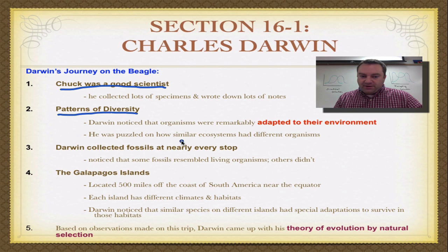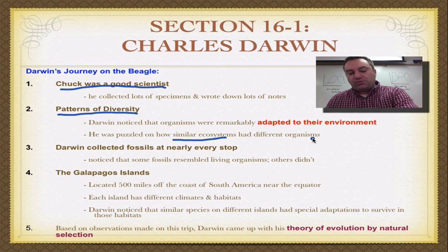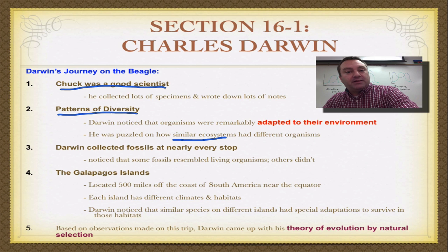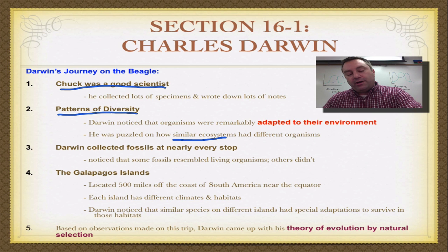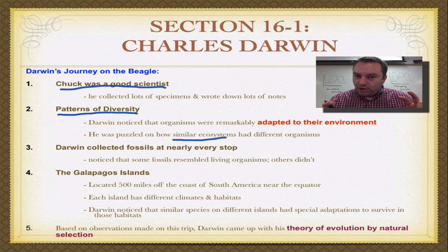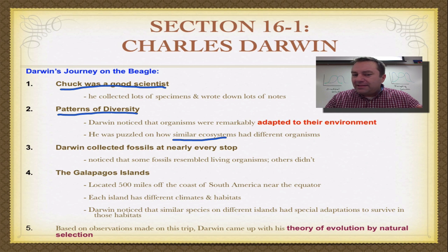He was also puzzled at how very similar ecosystems would have different organisms. If there was a grassland in Australia and a grassland in Argentina, you might think you'd see similar animals. For example, if there were deer on the grassland in Argentina, there should be deer in Australia. However, you might have deer or antelope in Argentina, but in Australia you'd have kangaroo. Why would you have remarkably different organisms doing the same role as the herbivores of that ecosystem? Charles was quite curious — why did that happen?